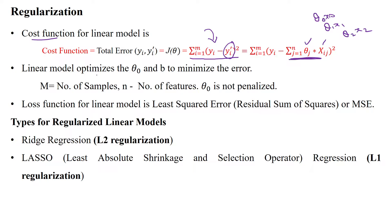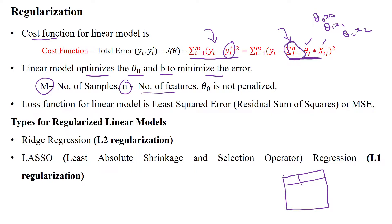The linear model is optimizing theta and b to minimize the error. Here m is the number of samples and n is the number of features, with j going from 1 to n. For example, if the dataset has features x_1, x_2, x_3, then n equals 3, and m is the number of rows or samples. Importantly, theta_0 will not be penalized — we will see that in the next slide. The loss function for the linear model is LSE or MSE.